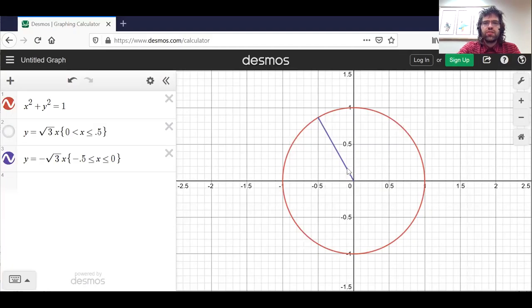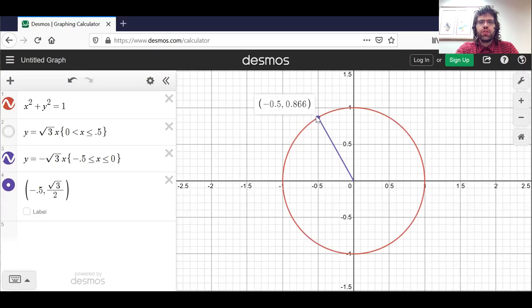Here is the angle, two pi divided by three, and here is the point that determines the sine and the cosine. The sine is the y-coordinate of this point, the cosine is the x-coordinate of this point.